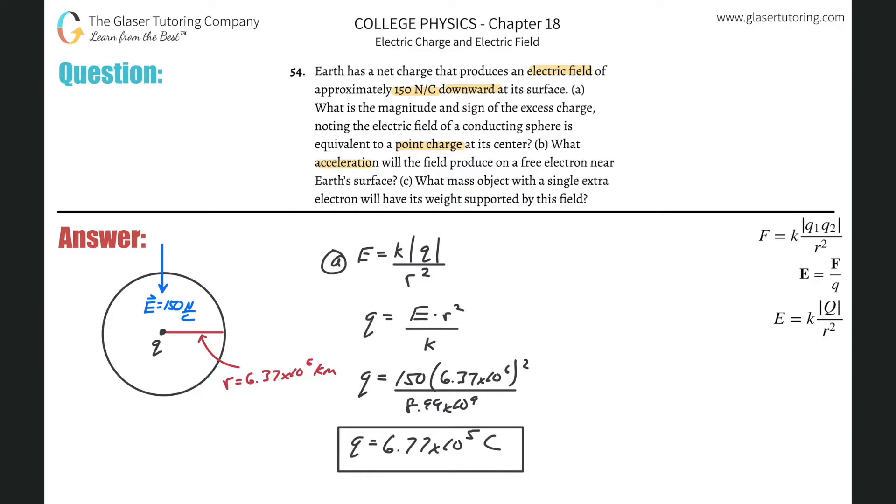What acceleration will the field produce on a free electron near the Earth's surface? Alright, so now pretend that we have over here an electron. That point will represent the charge of an electron.